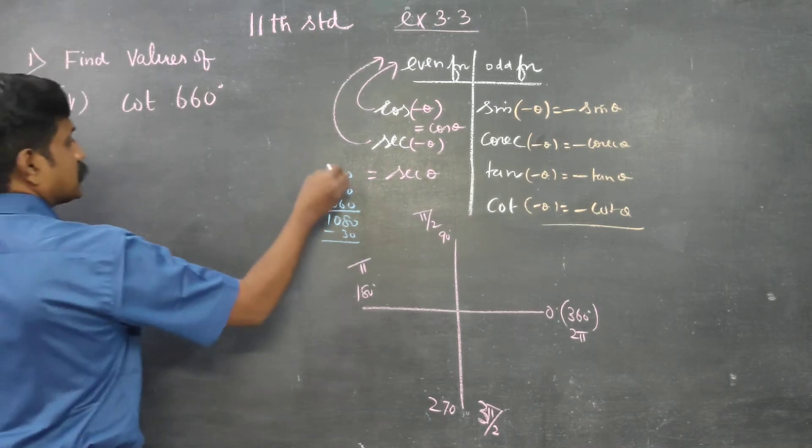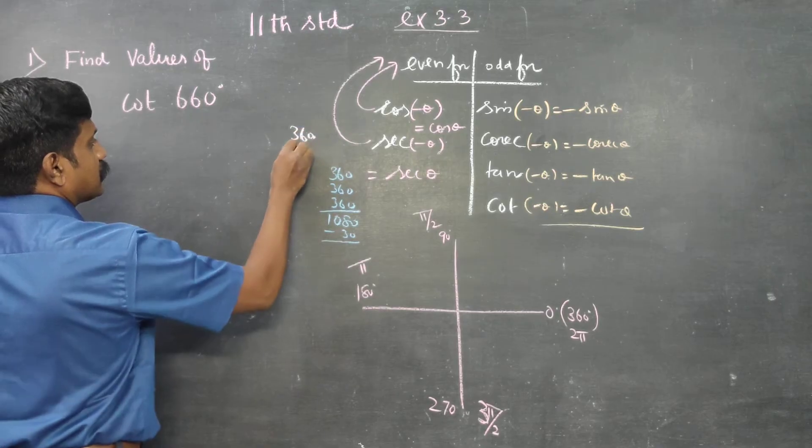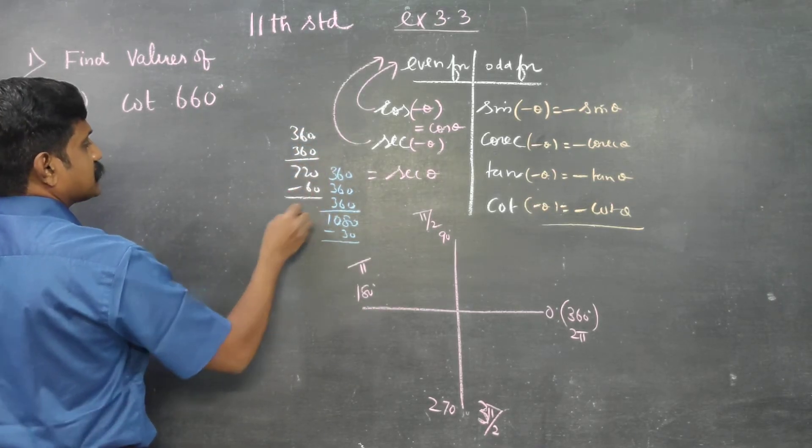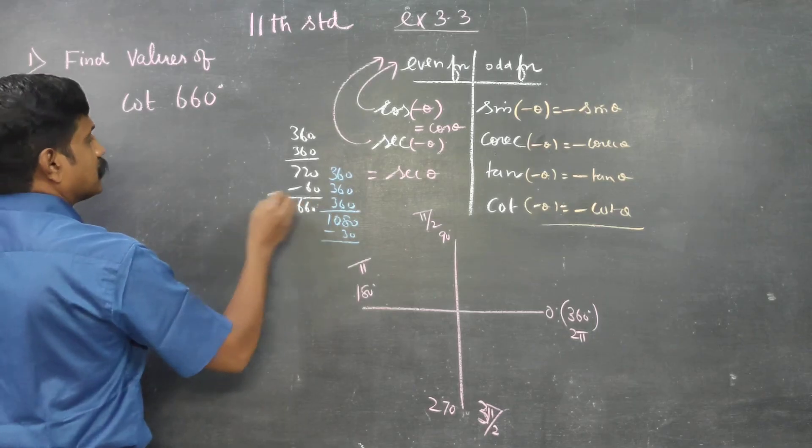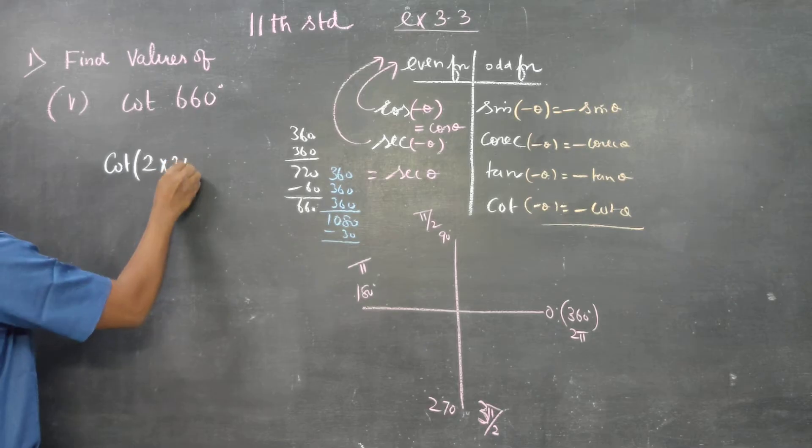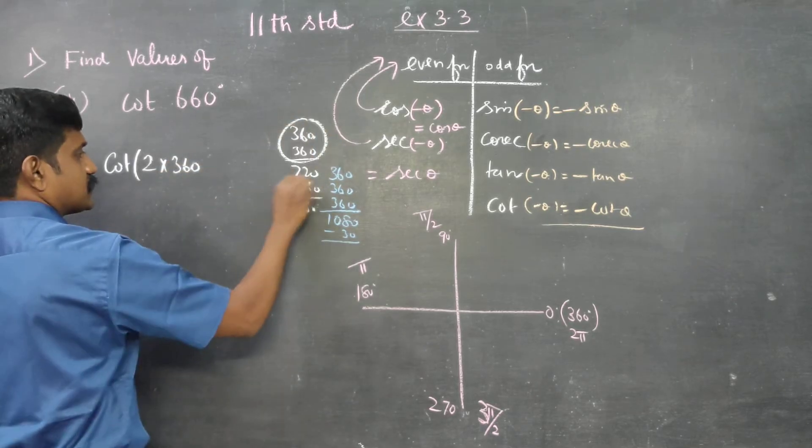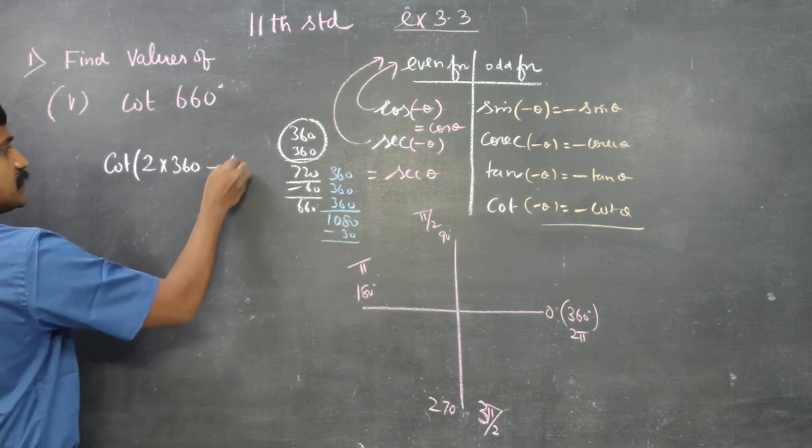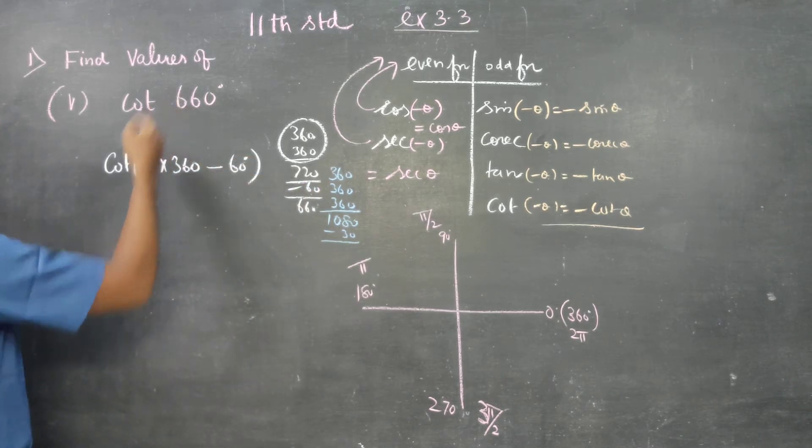660 can be written as 360... 360 is 720, 720 minus 60 is 660. But this can be written as cot 2 into 360. 2 into 360 is 720 minus 60. 720 less 60 is 660.